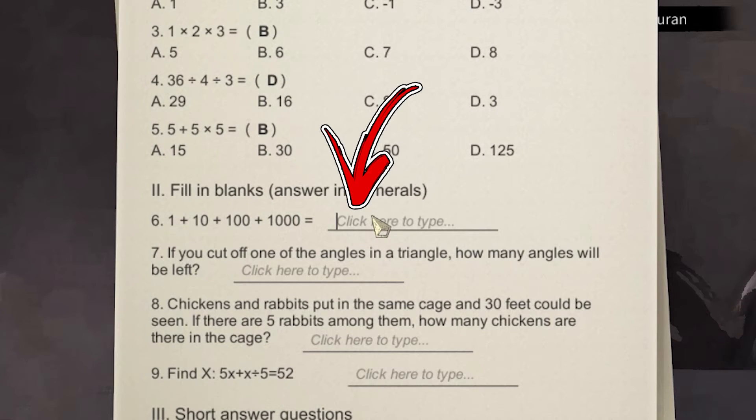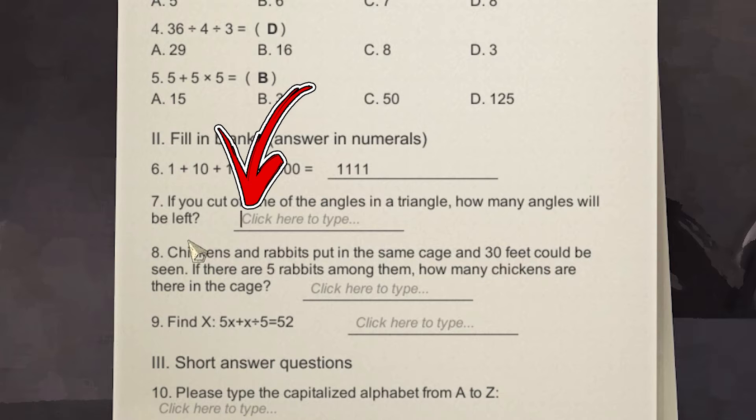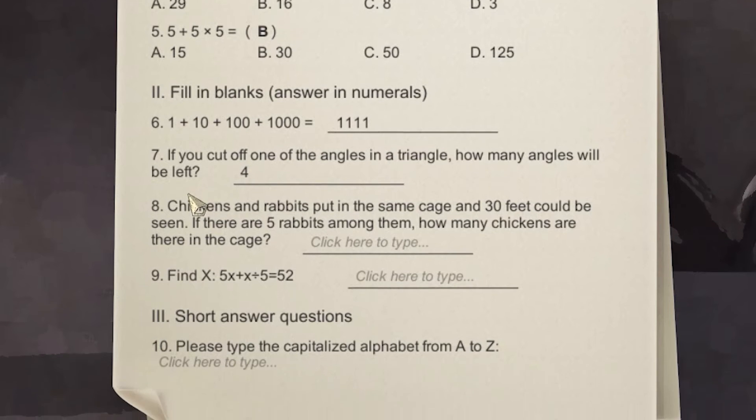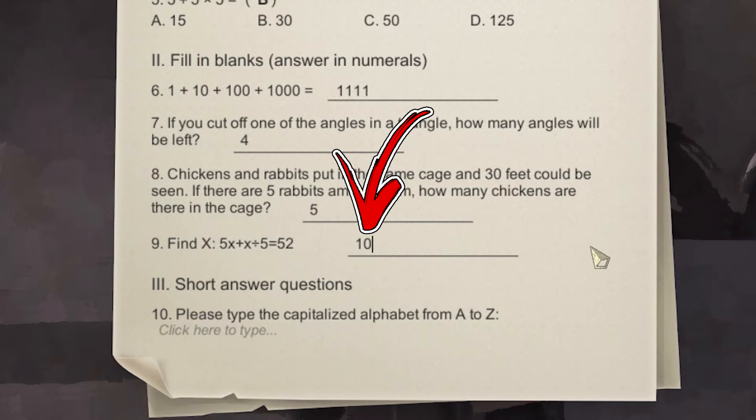For the sixth you have to click on top of the underlined text and write 1111. For the seventh you have to write the number 4, for the eighth question the number 5, for the ninth question the number 10.